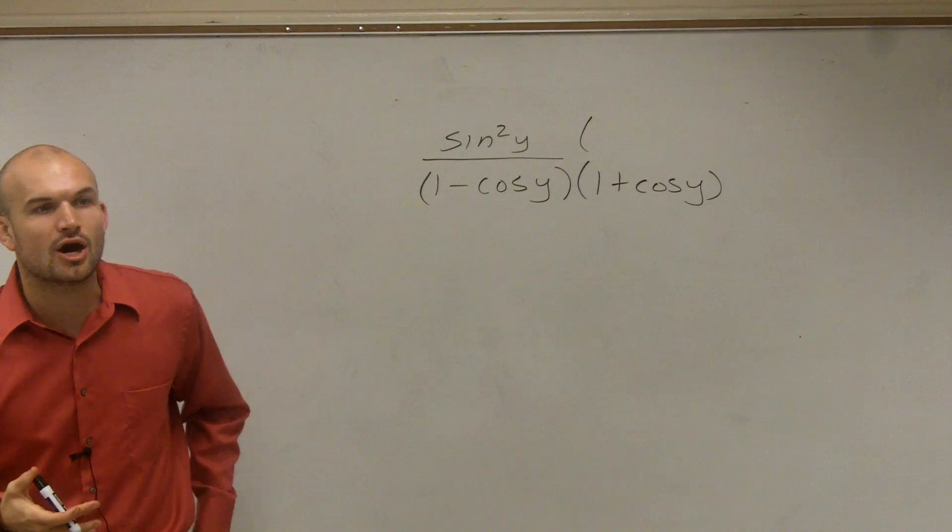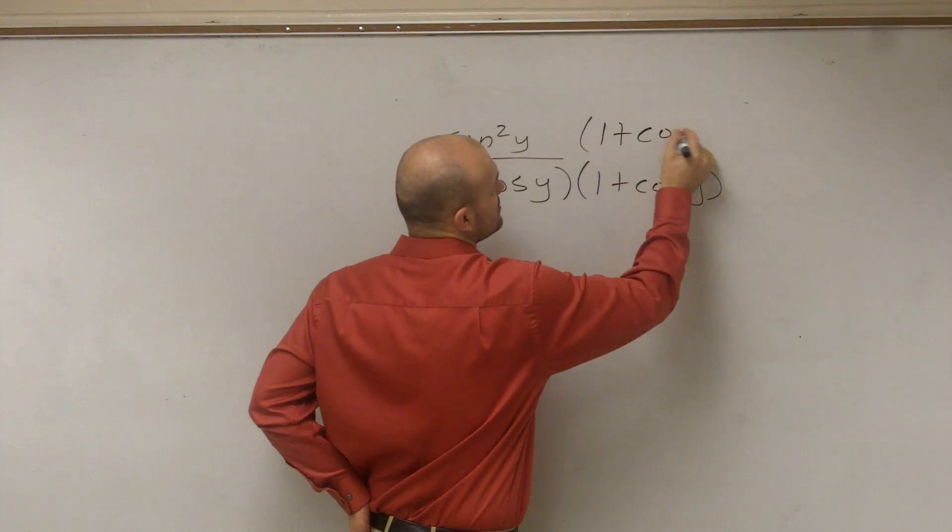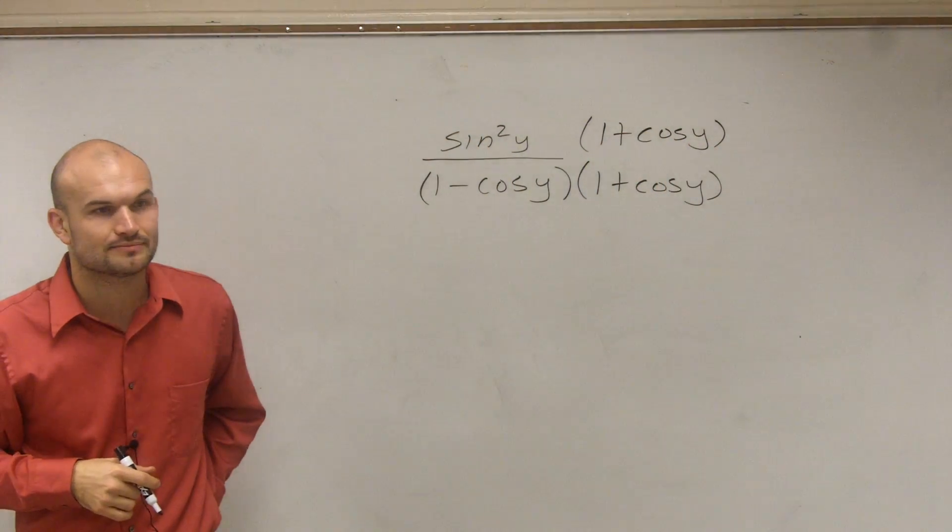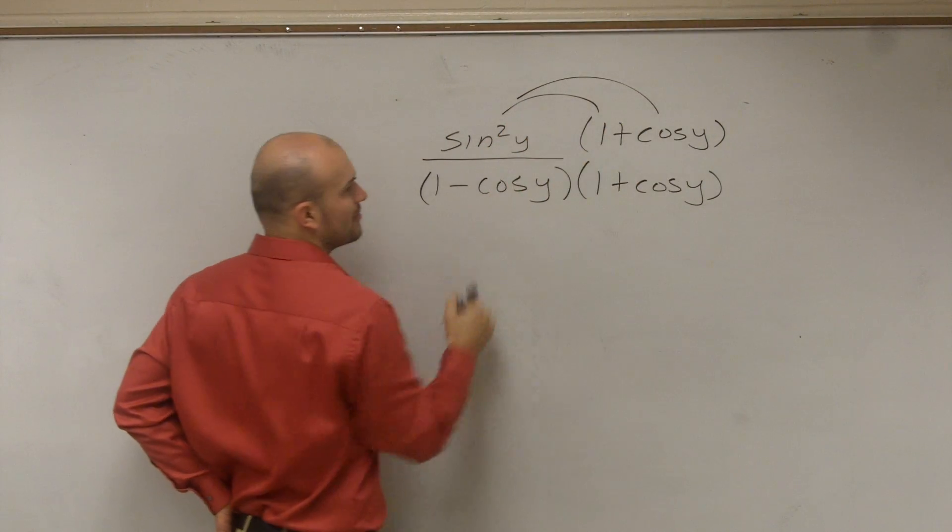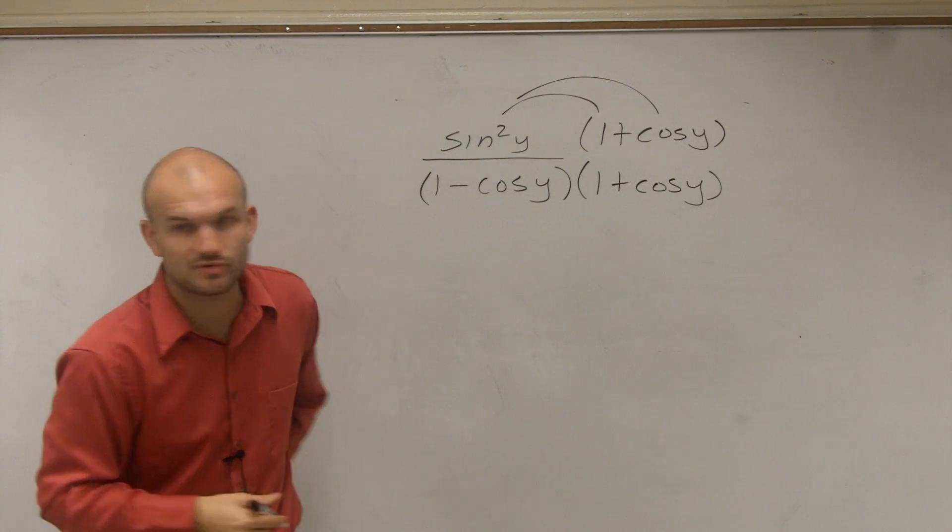So when you want to get something off of it, you want to multiply by that conjugate. So it's going to be 1 plus cosine of y. So multiply that on the top and the bottom. So now, you're going to simply apply the distributive property, and then here, when you multiply a number by its conjugate, that's the difference of two squares.